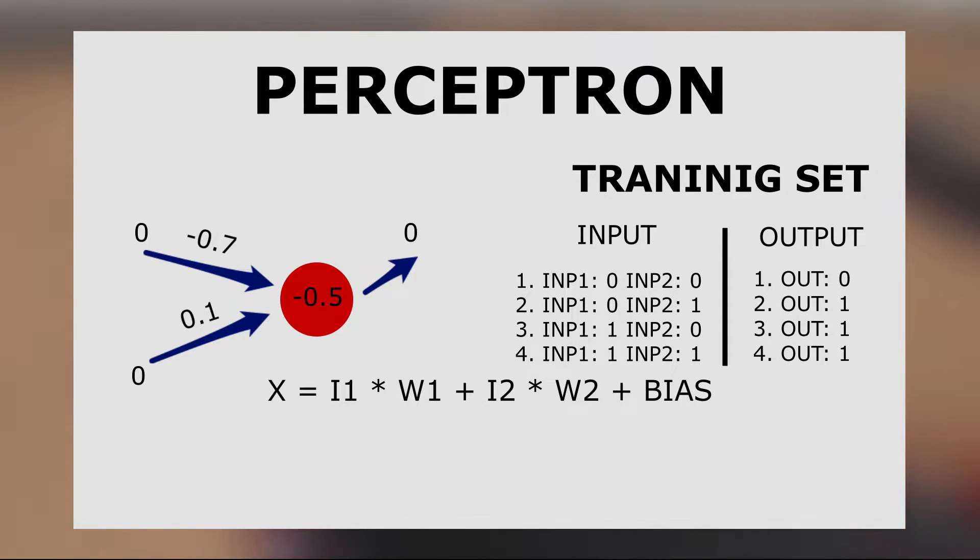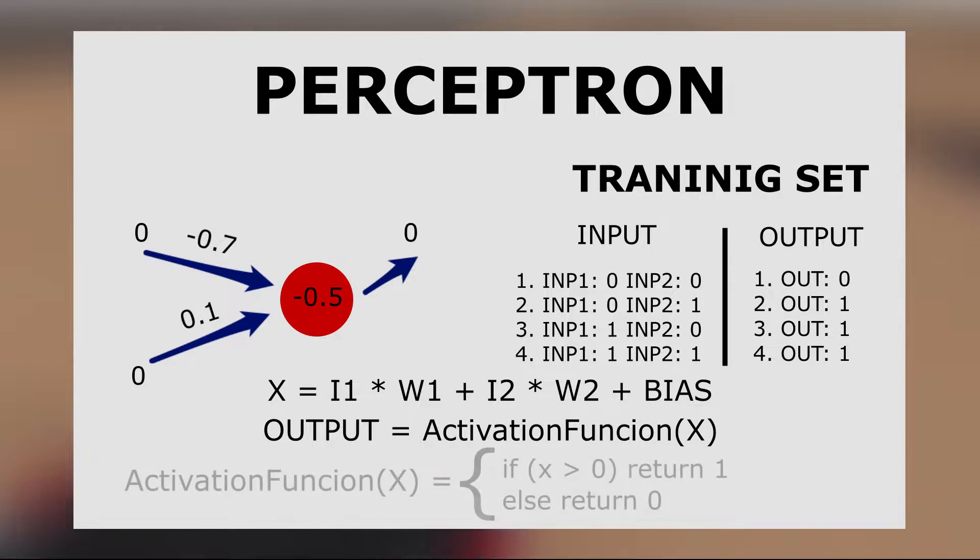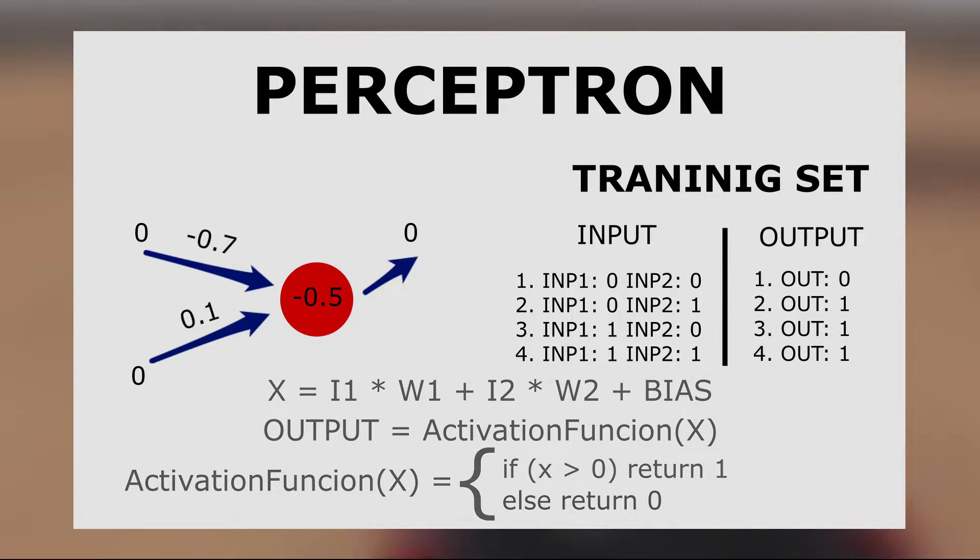Next, the result is passed to the activation function. Our activation function will take its parameter and check whether it's bigger than 0. If so, then we return 1 and if not we return 0.